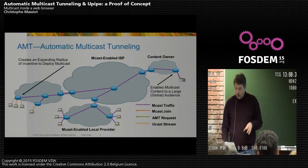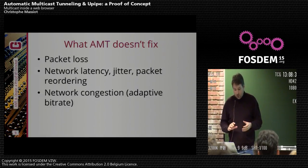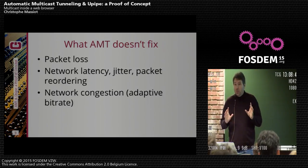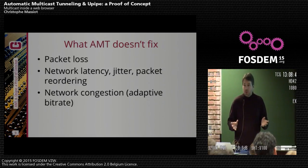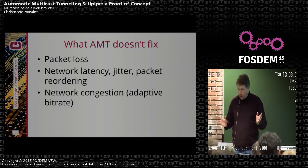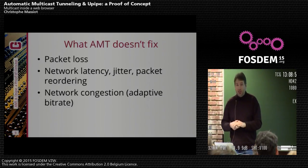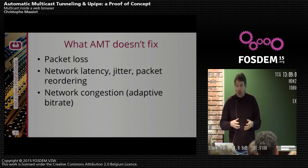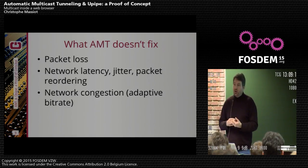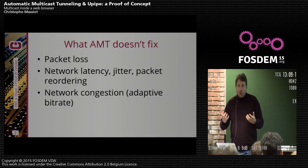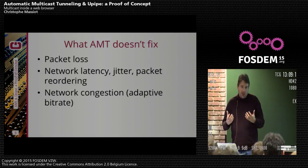AMT looks great, but there are also a few things it doesn't fix. AMT is a UDP protocol only, just like most multicast streams. So if you have packet loss on your network, you have packet loss at the end — AMT doesn't fix that. Also, if you have latency jitter or packet reordering, you have to deal with that at the application level with protocols such as RTP. And if you have network congestion, you will not be able to do adaptive bitrate streaming — you have to implement that at the application layer as well.